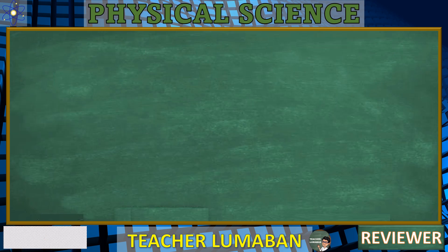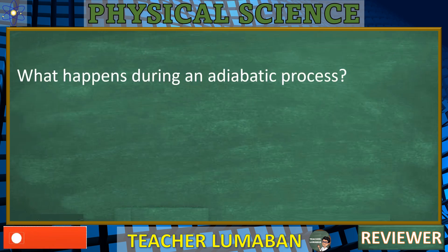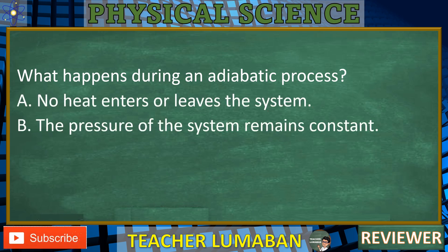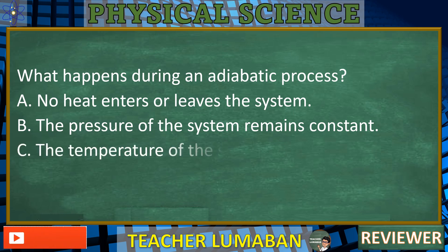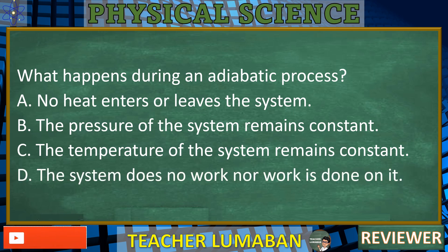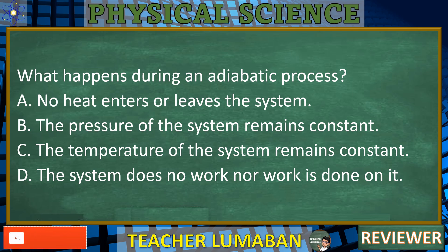What happens during an adiabatic process? A. No heat enters or leaves the system. B. The pressure of the system remains constant. C. The temperature of the system remains constant. D. The system does no work nor is work done on it. In the next five seconds, select the best response from the available options.